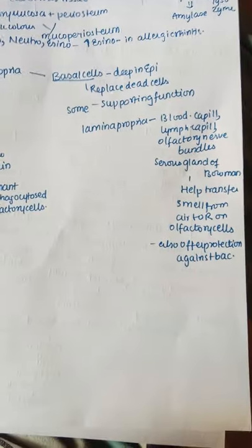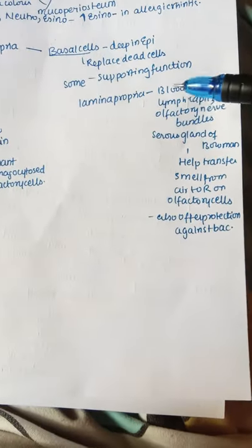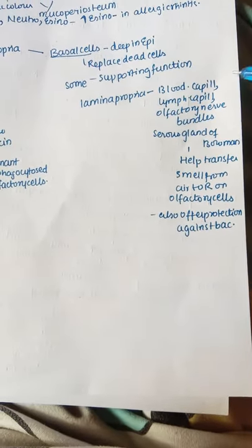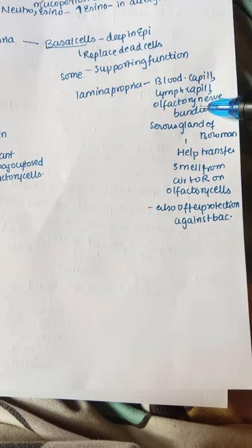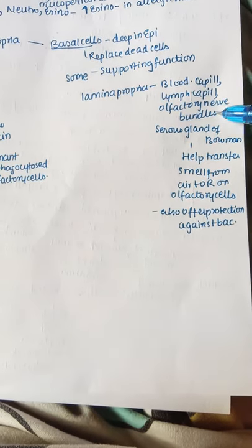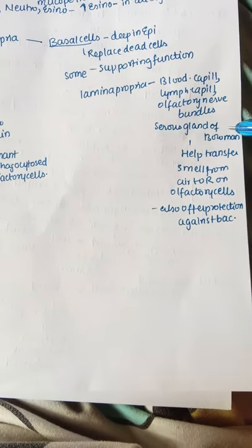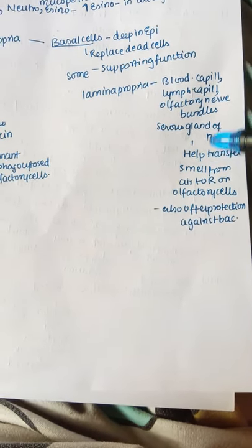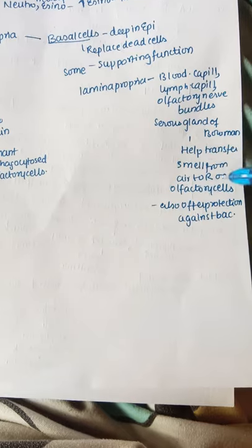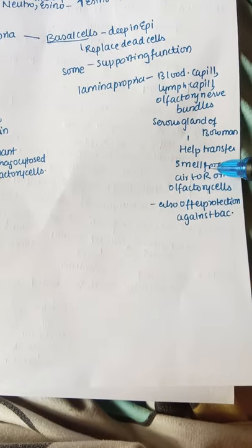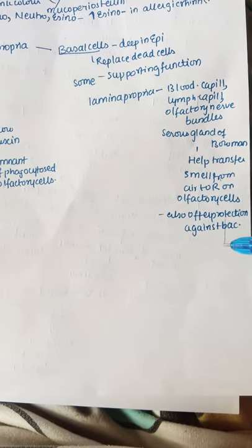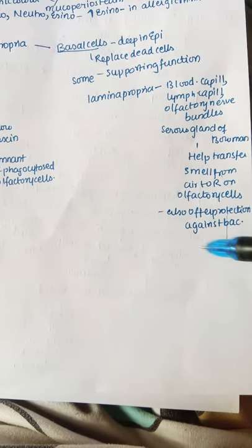The lamina propria of the olfactory mucosa contains blood capillaries, lymph capillaries, olfactory nerve bundles, and serous glands of Bowman. The Bowman's glands mainly help transfer smell from the air to the receptors on the olfactory cells and also offer protection against bacteria.